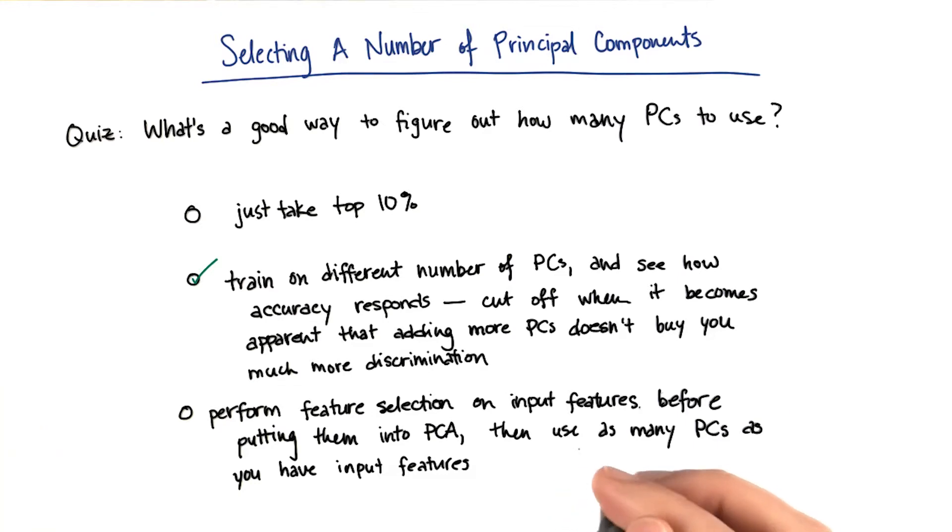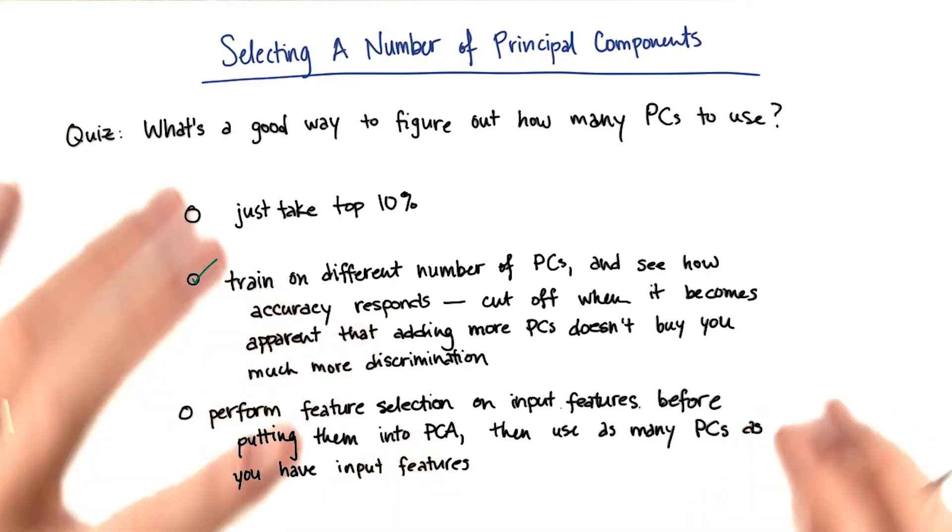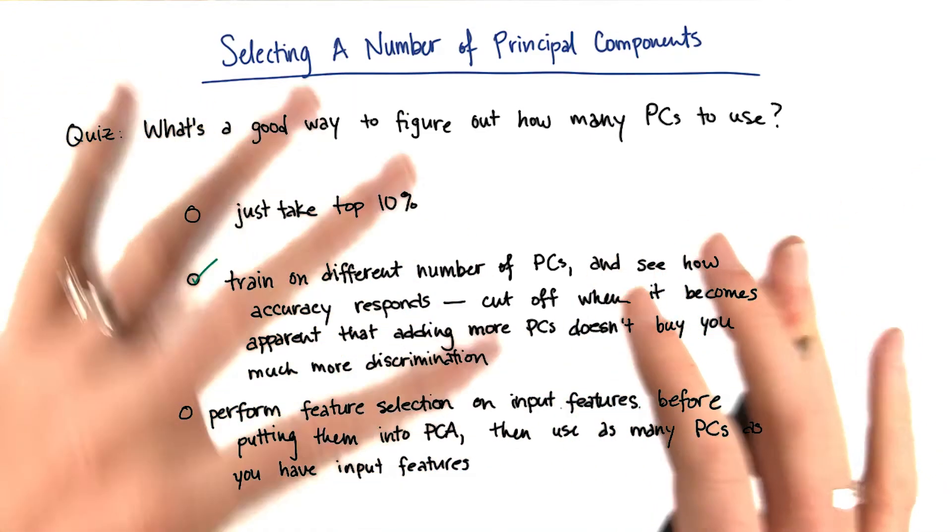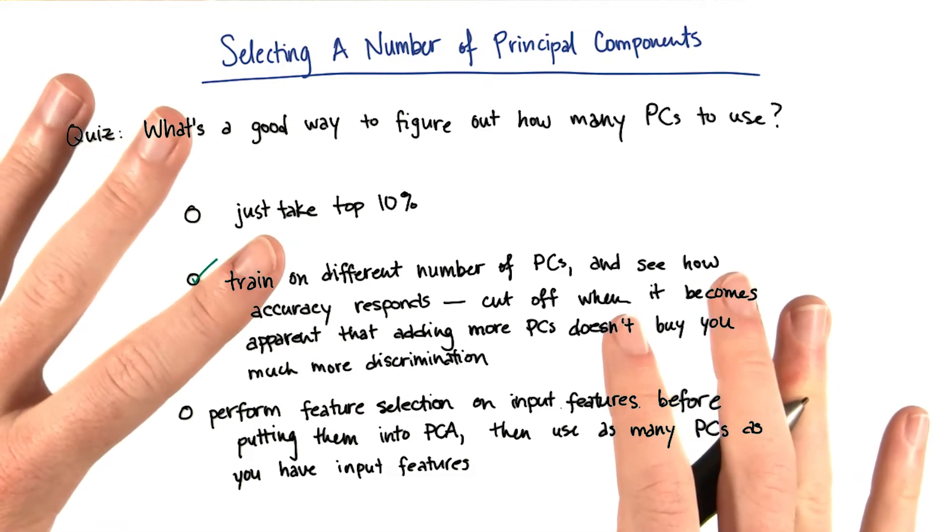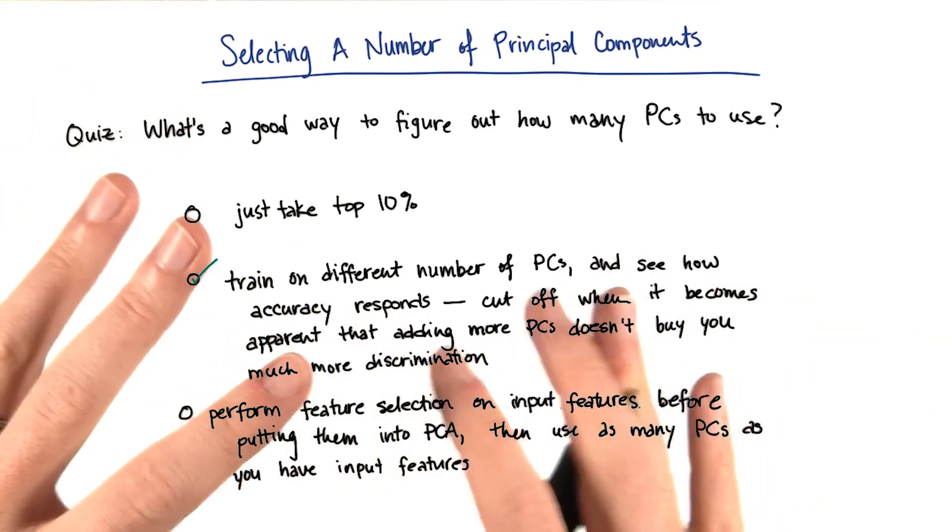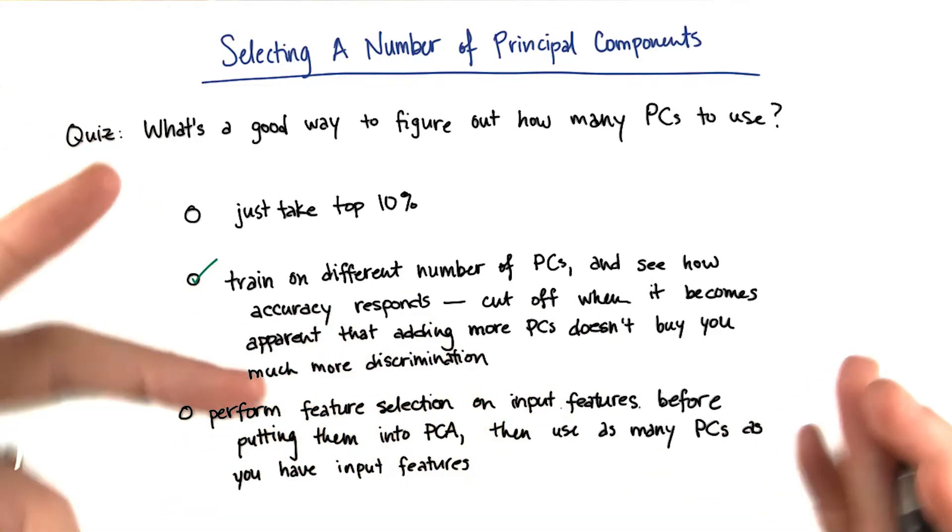One thing you don't want to do, though, is performing feature selection before you go into PCA. Remember, PCA is going to find a way to combine information from potentially many different input features together. So if you're throwing out input features before you do PCA, you're throwing out that information that the PCA might be able to rescue in a sense.